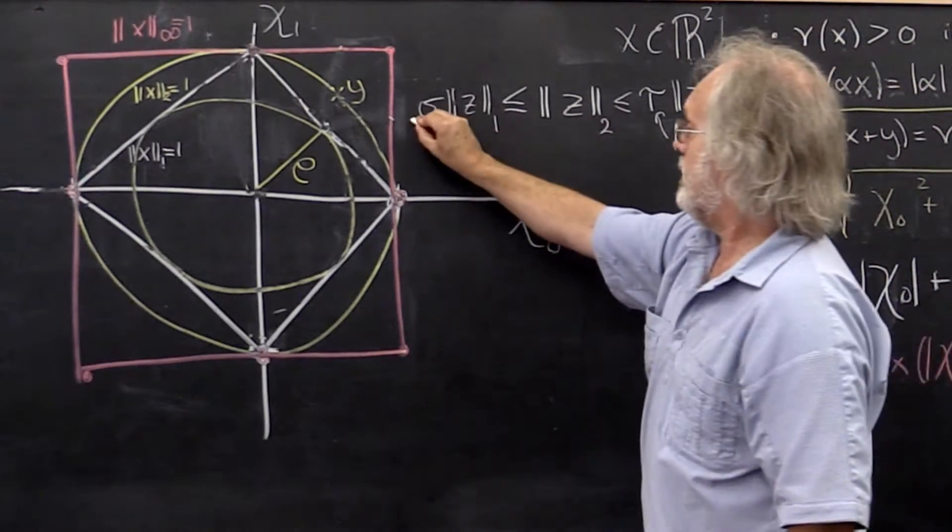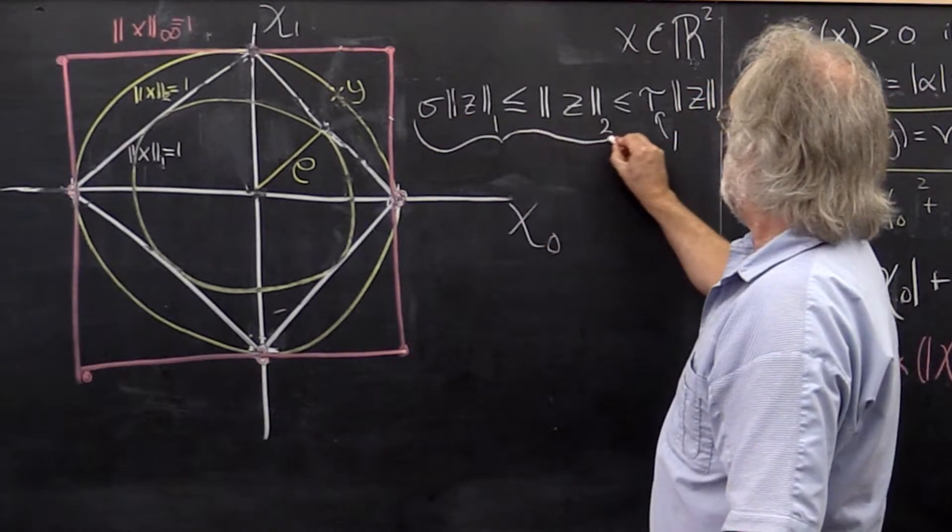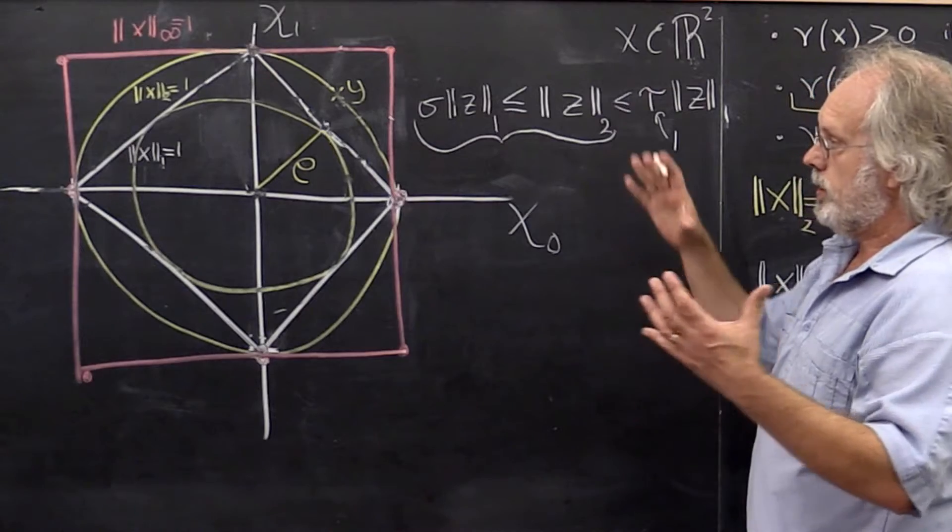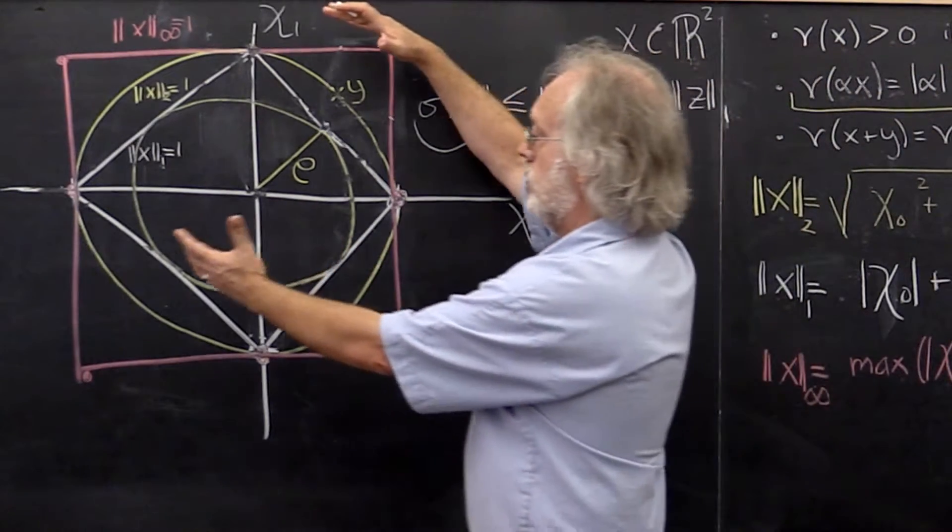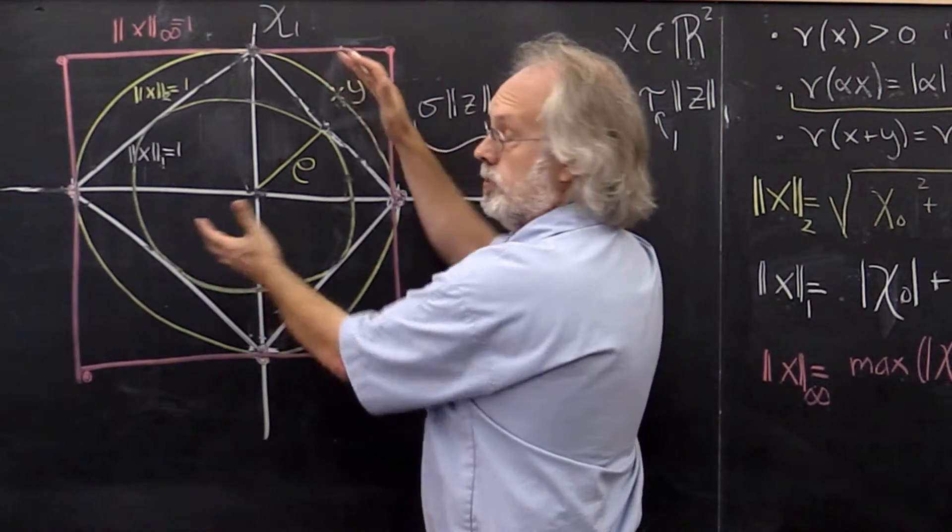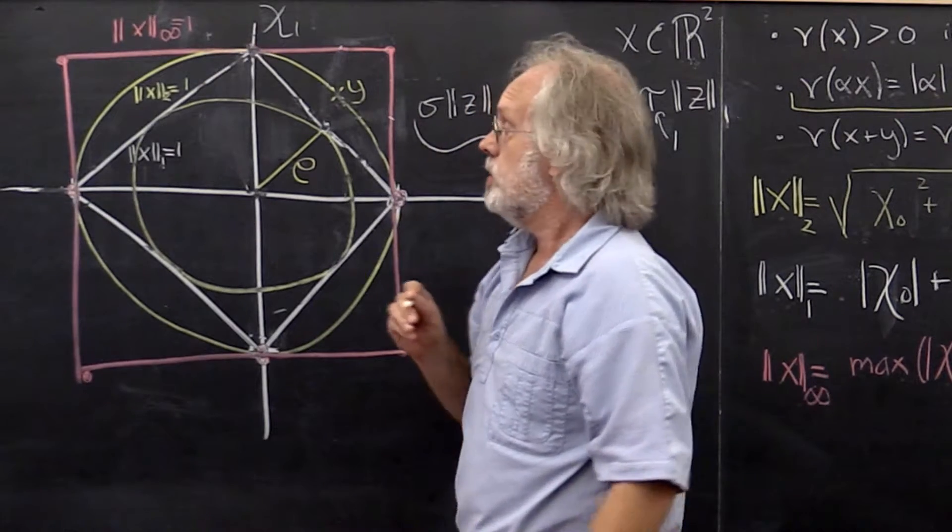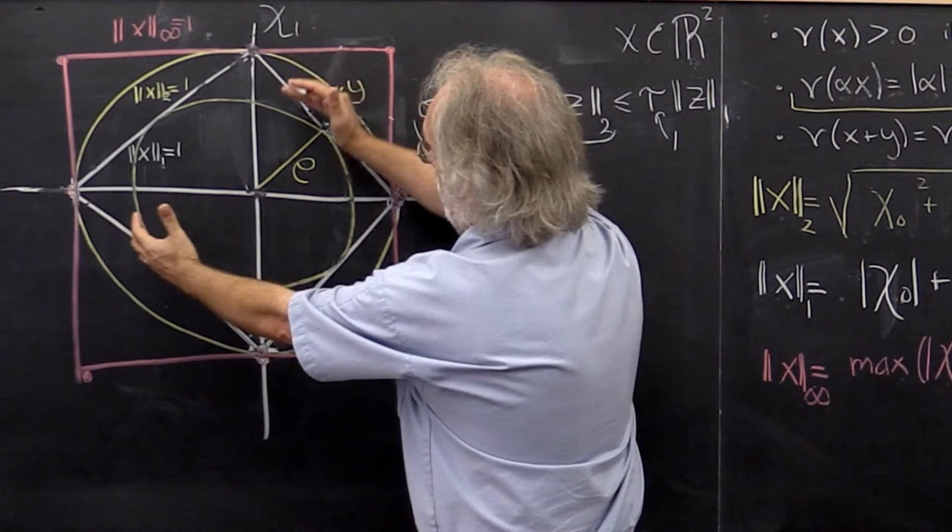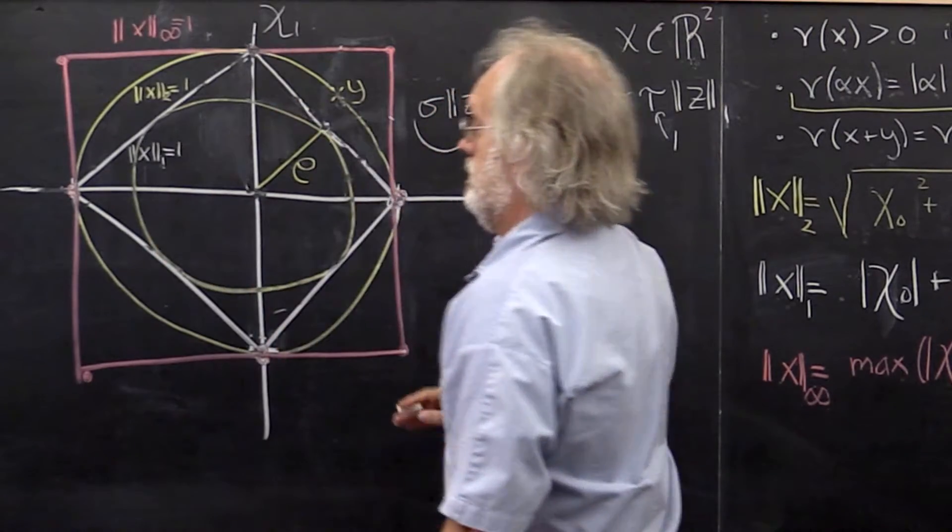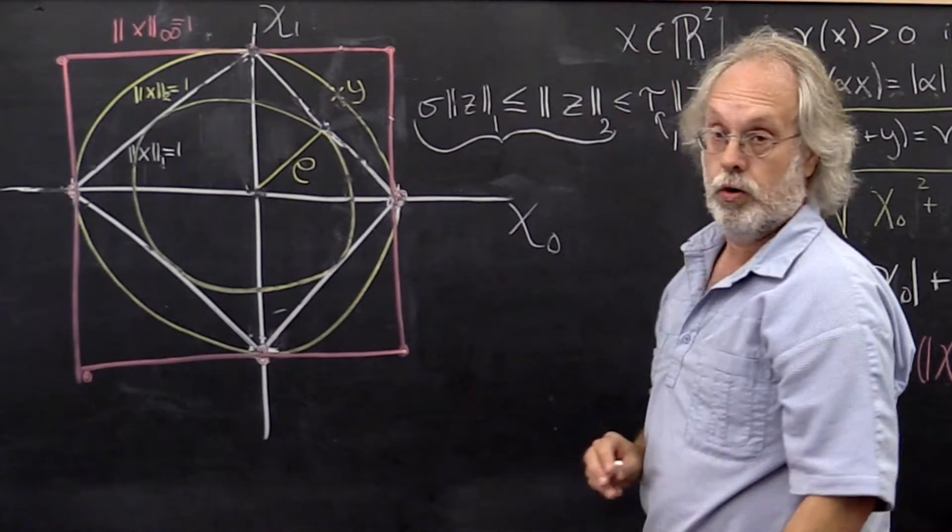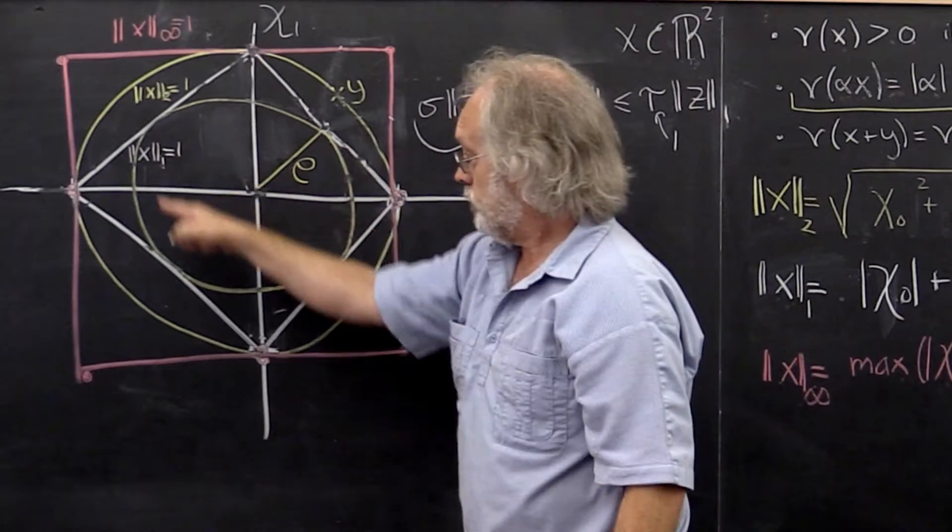Now let's focus on how to get here. Well, we noticed that our argument was all about how the unit balls were nested. So why don't we take a unit ball that is inscribed in the unit ball for the 1-norm using the 2-norm.